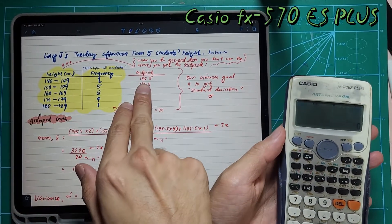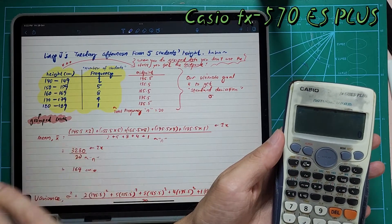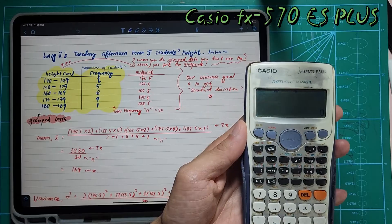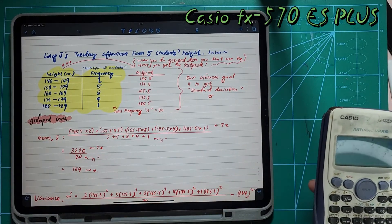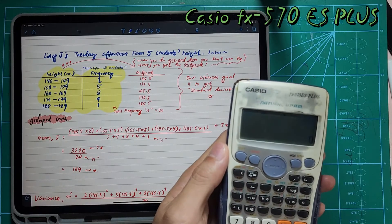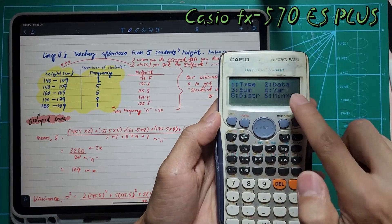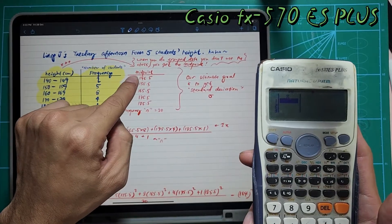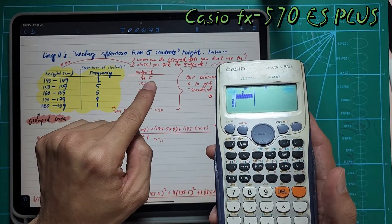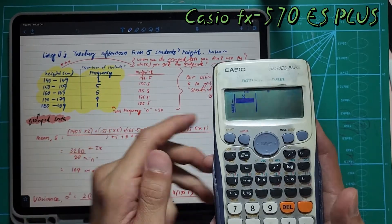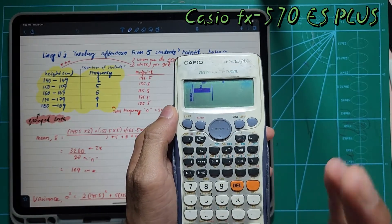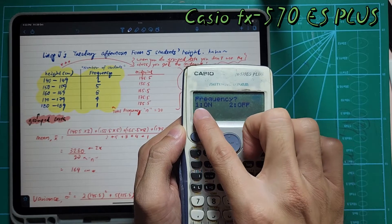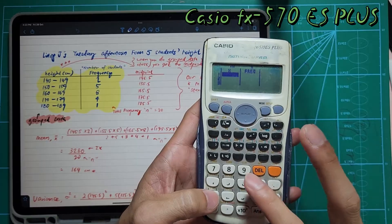Now we're going to insert all your midpoints, which represent the different classes. We're not required to insert 140 to 149 — we use the midpoint to represent the height. Press Shift 1, you'll see 'Data' — press number 2. You get the x column only, but x represents only one data point. Since we have two students, we need to trigger the frequency column. Press Shift Mode, go down to number 4 for Statistics, and turn Frequency ON — your frequency column appears.